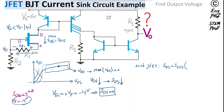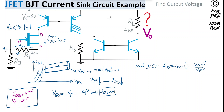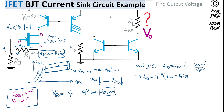We make the approximation that the output slope is practically very small, so this is a very good current source. We want to find IDS: R1 is 2 kΩ, IDSS is 4 mA, and VP is negative 4 V. VGS equals negative R1·IDS because the voltage drop across R1 sets the gate below source. Substituting VGS = −R1·IDS and VP = −4 V into the equation gives IDS = 4 mA × (1 − (−R1·IDS)/(−4 V))².